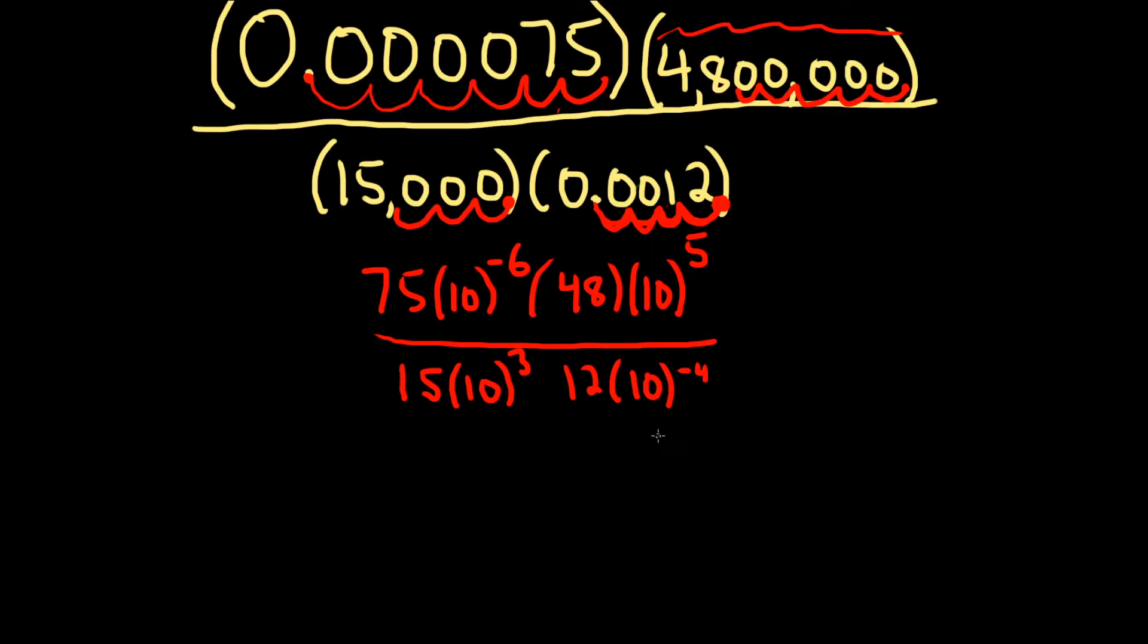All right, let's clean this up. Let's go ahead and cancel these. So this will give us a 5 up top, let me switch colors, this is 5. And 10 to the negative 6 times 10 to the 5, let's multiply these. When you add the exponents, you're going to get 10 to the negative 1, I'll write that here.